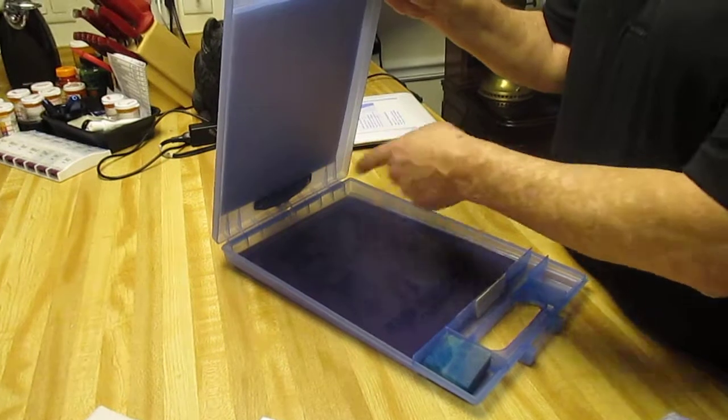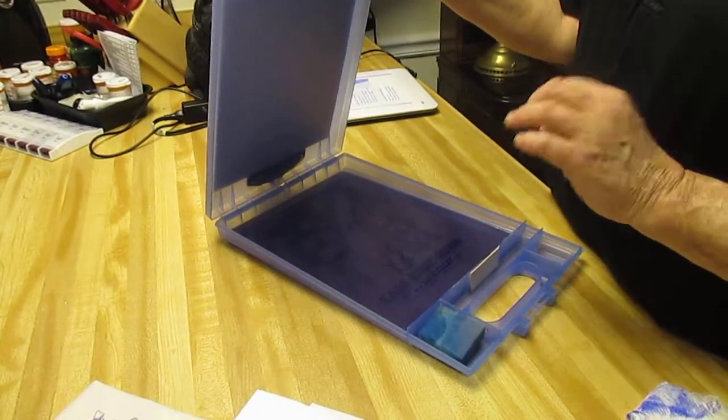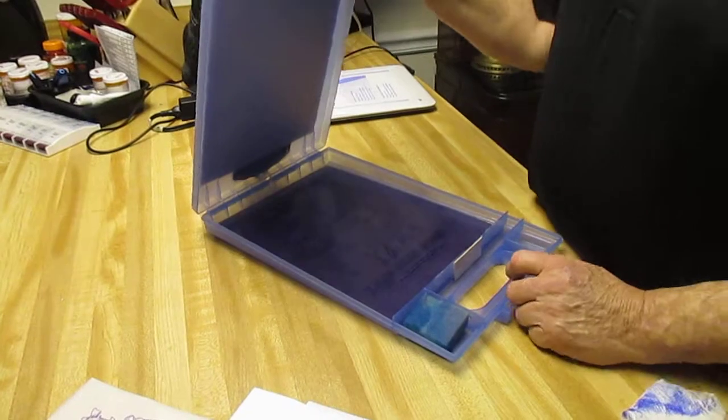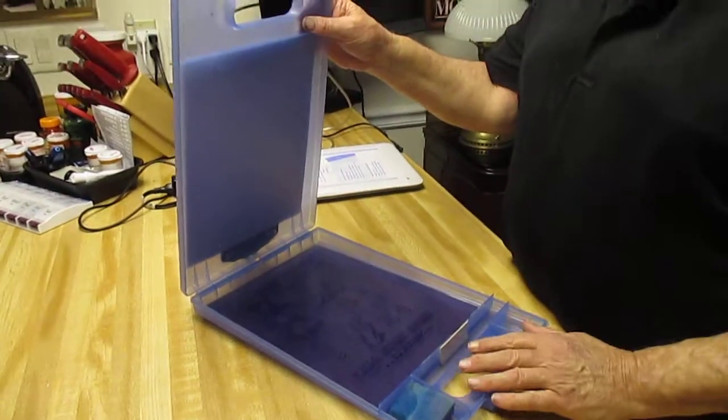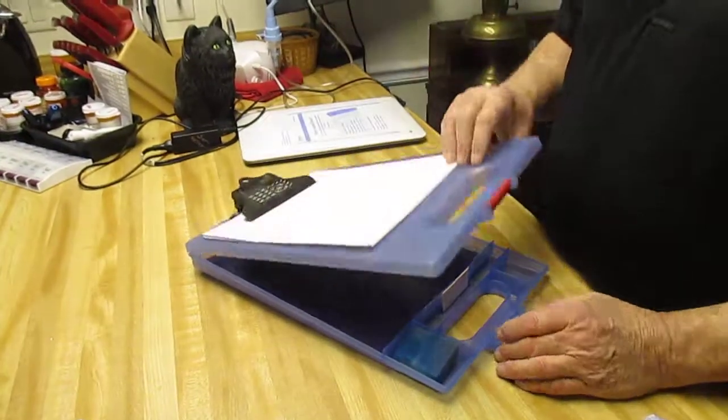The easiest thing is just to run it gently under tepid water. Not warm water, tepid water. And you'll see the image wash right off. And I thank you very much. It's on eBay, listed under hectograph. And I do sell supplies.